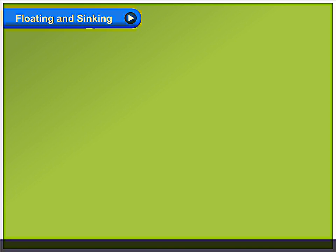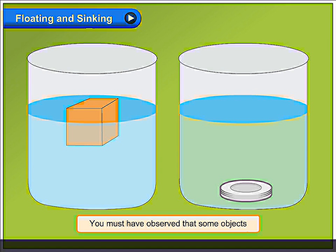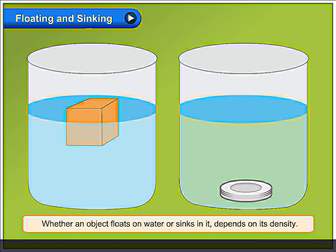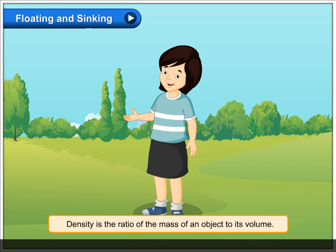Floating and sinking. You must have observed that some objects sink in water while some float on water. Whether an object floats on water or sinks in it depends on its density. Density is the ratio of the mass of an object to its volume.